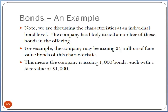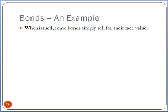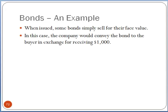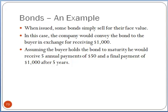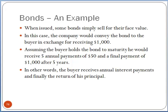That begs the question: what do bonds sell at? Some bonds will simply sell for their face value. In the case from the prior example, the company would convey the bonds to the buyer, and the buyer would pay $1,000 to the company — sold at its face value. Assuming the buyer holds the bond to maturity, the buyer would receive five annual payments of $50 — those coupon payments — and a final payment of $1,000 after five years. In other words, the buyer receives the annual interest payments and then gets their principal returned. It's just a loan.